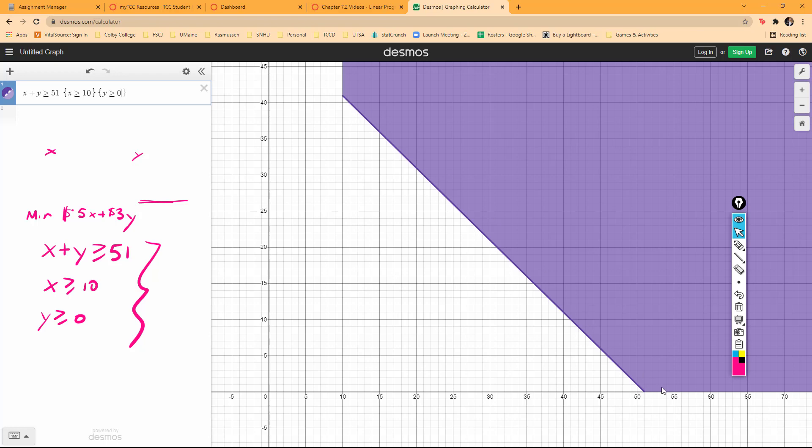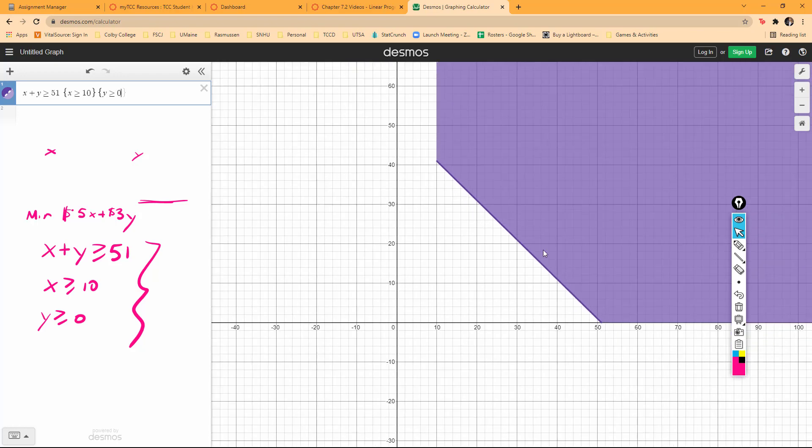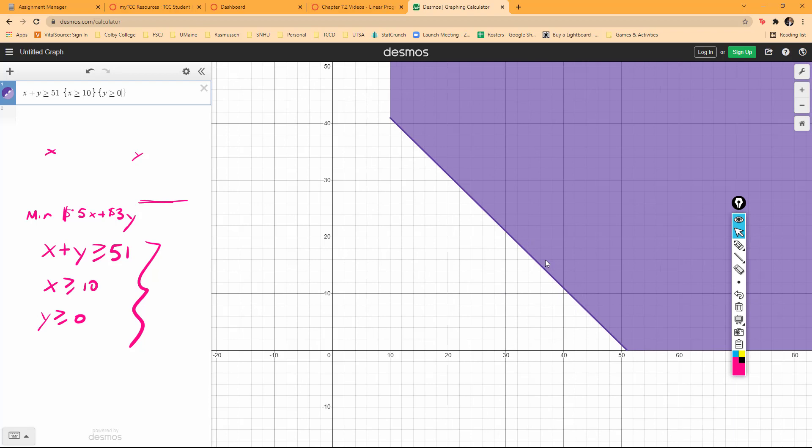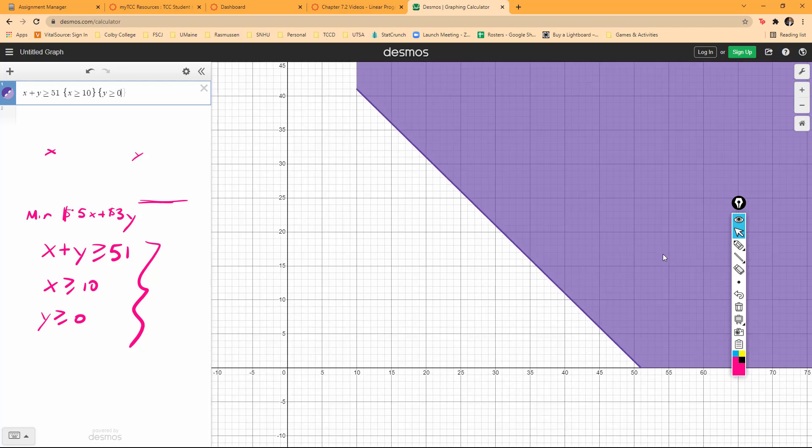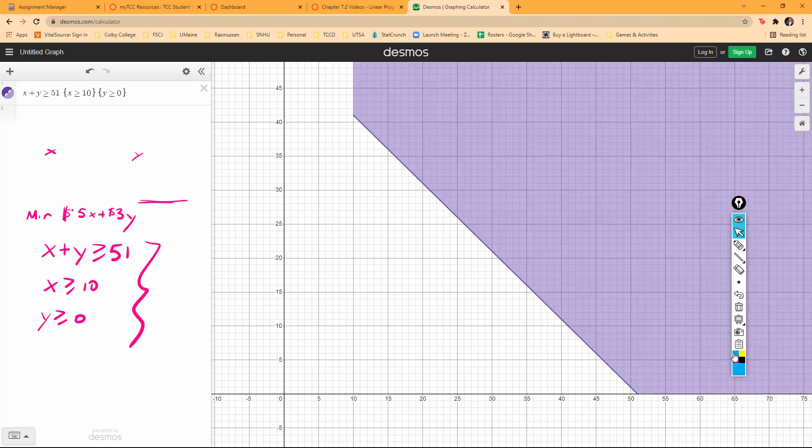We're looking at these corner points. If you scroll this out, this goes forever. We're trying to figure out which would be the minimum value. Looking here, this point would be at 10, 41. And then this point right here looks to be at 51, 0.